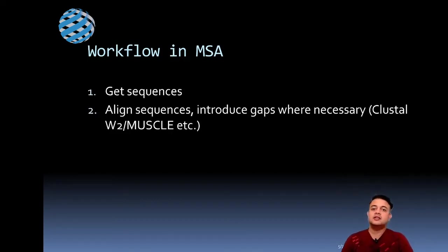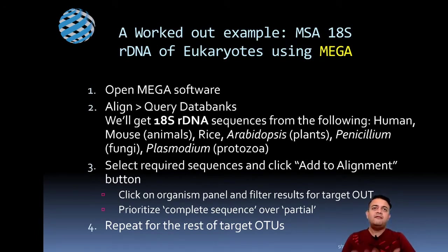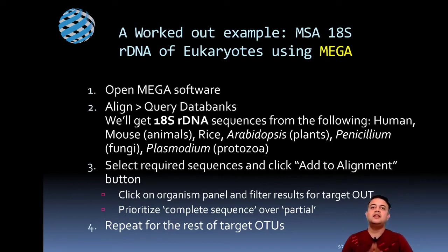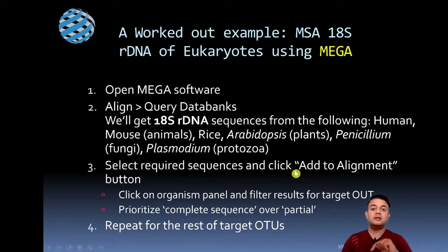In MEGA (freeware), you open MEGA, then go to Align, then Query Data Bank to get 18S sequences. Try getting 18S rDNA sequences from human, mouse, rice, Arabidopsis, Penicillium (fungi), and Plasmodium (protozoa). Select the required sequences and click 'Add to Alignment.' This is an internal browser within MEGA — you don't have to download the sequences separately; just click the radio button and add to alignment, then click the organism panel to filter results to your target.